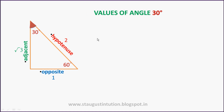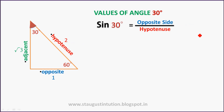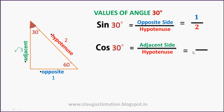So what is sine 30? Sine 30 is equal to opposite side divided by hypotenuse. The opposite side is 1 and the hypotenuse is 2, so sine 30 equals 1 by 2. Cos 30 means adjacent side divided by hypotenuse, which equals root 3 by 2.